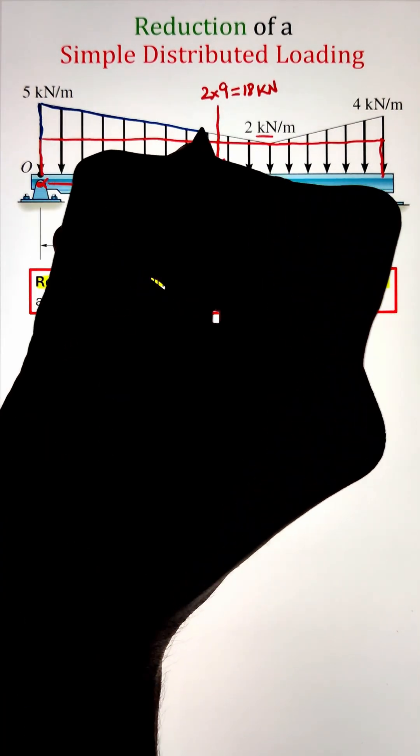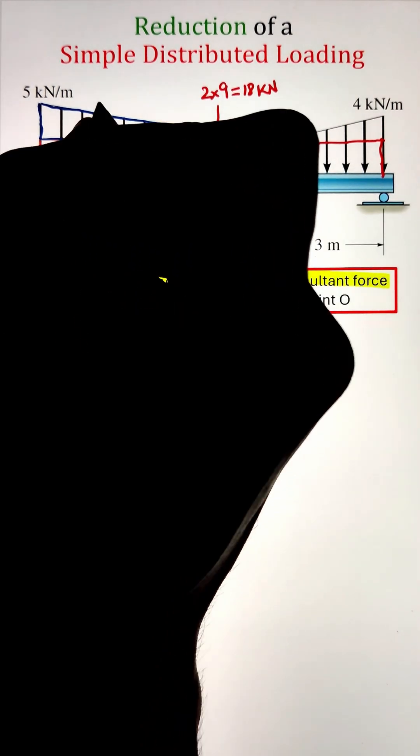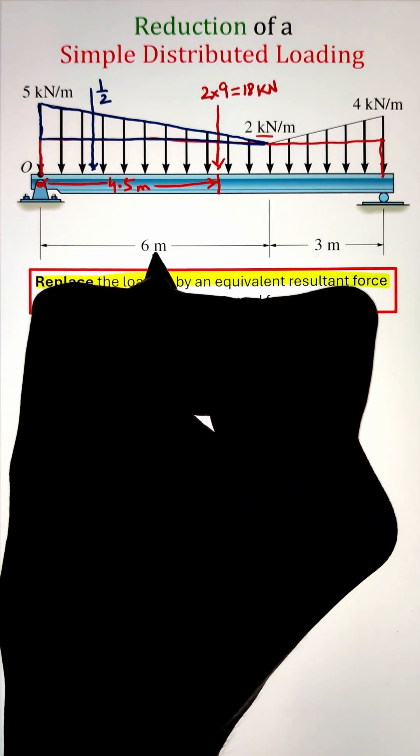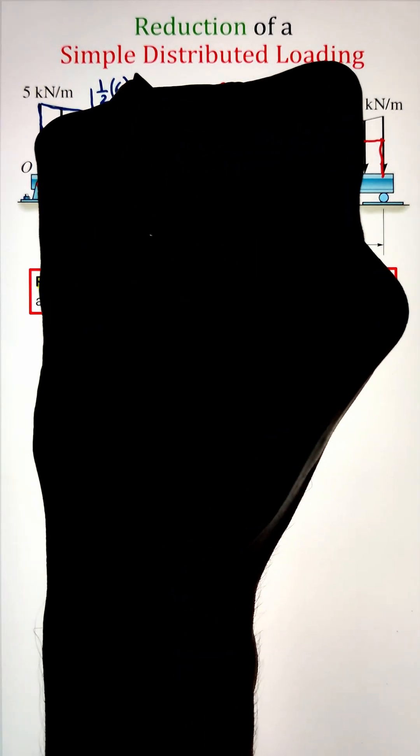Next, I have a right angle triangle with a base of 6 meters and an altitude of 5 minus 2 kilonewtons. This basically gives us the area equals to half times base times altitude equals to 9 kilonewton.